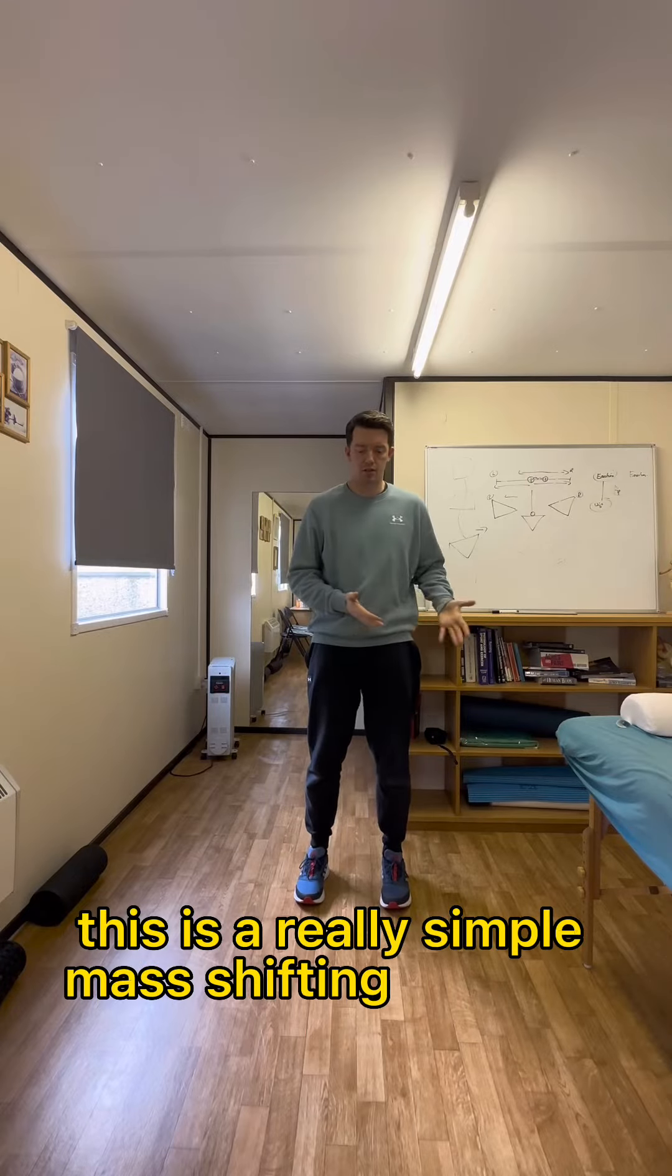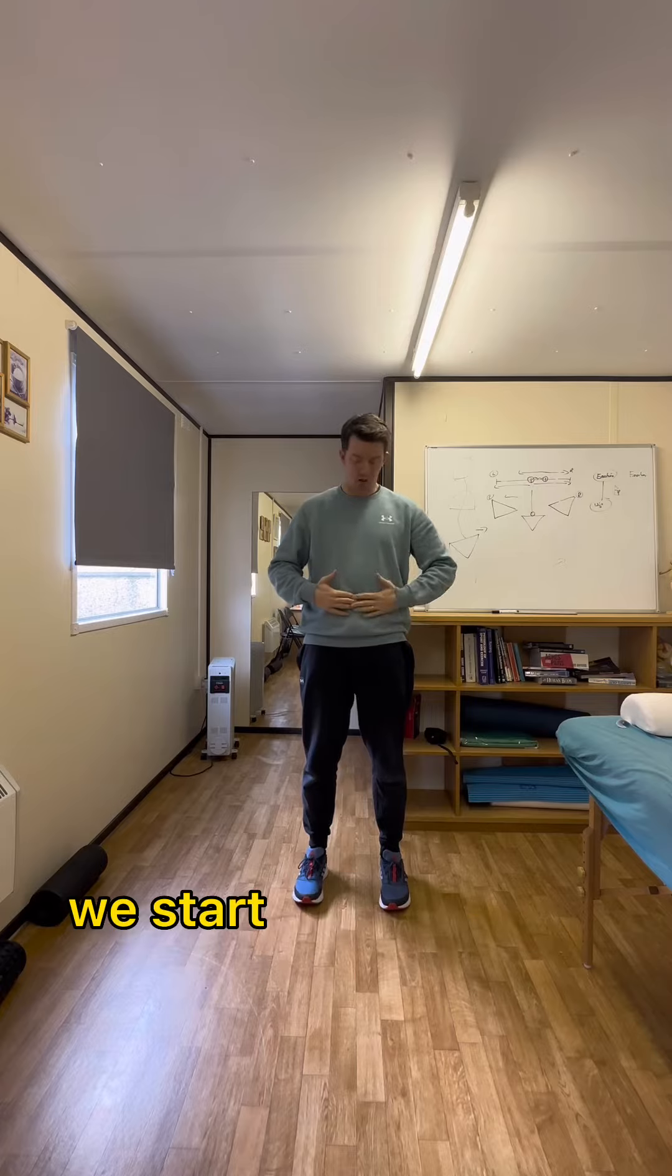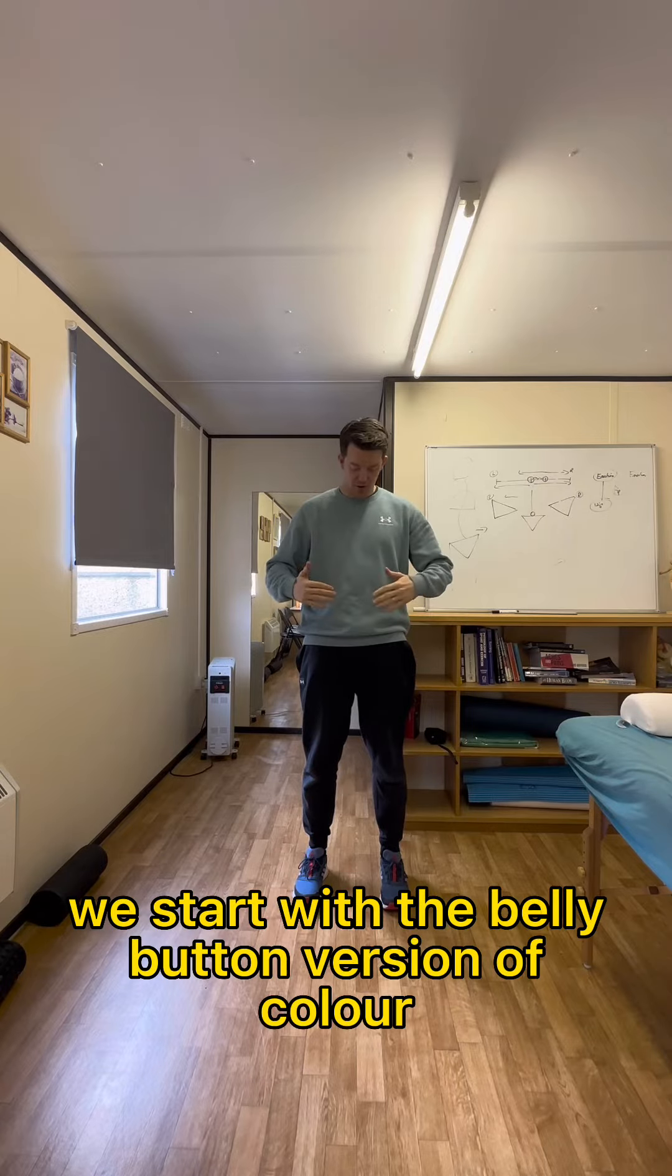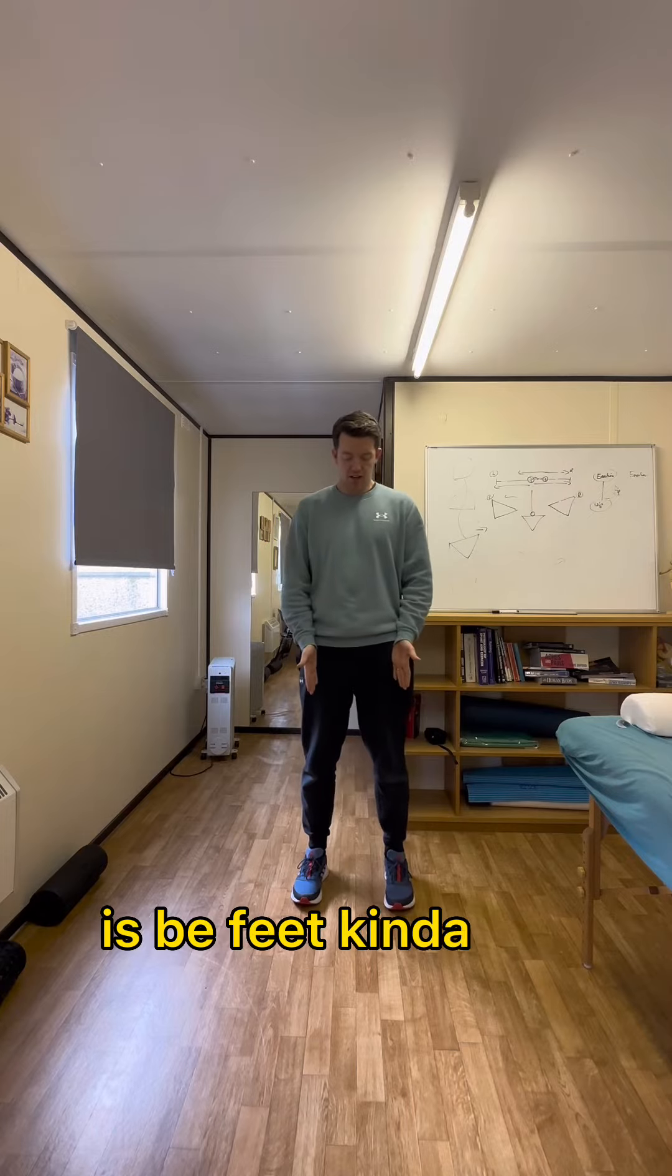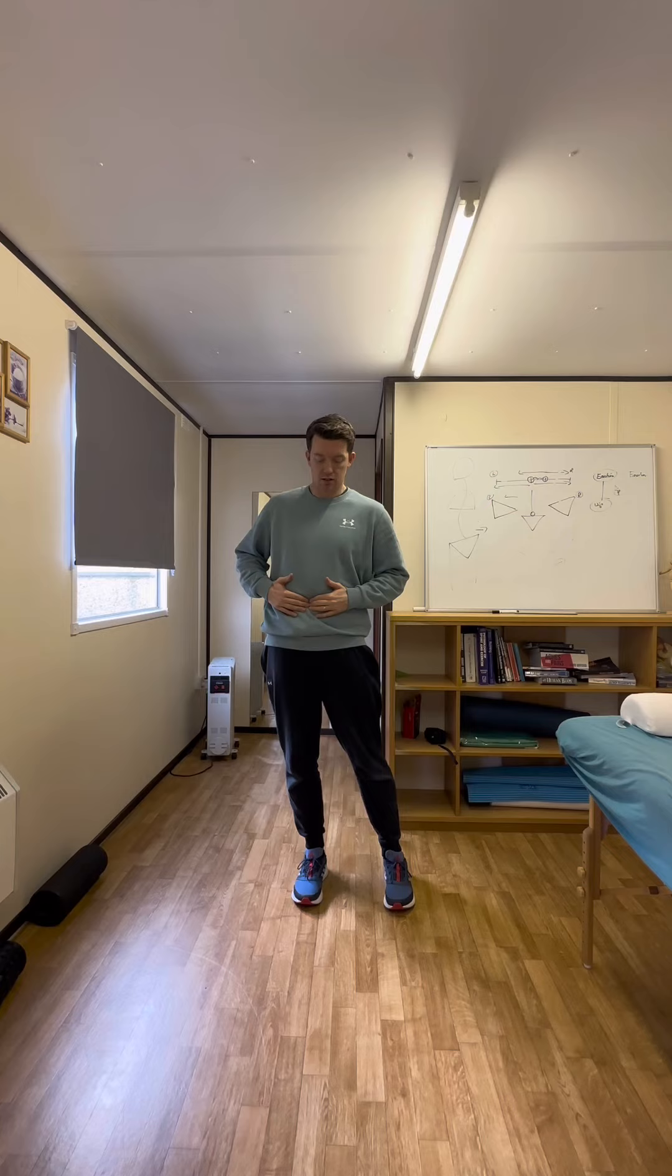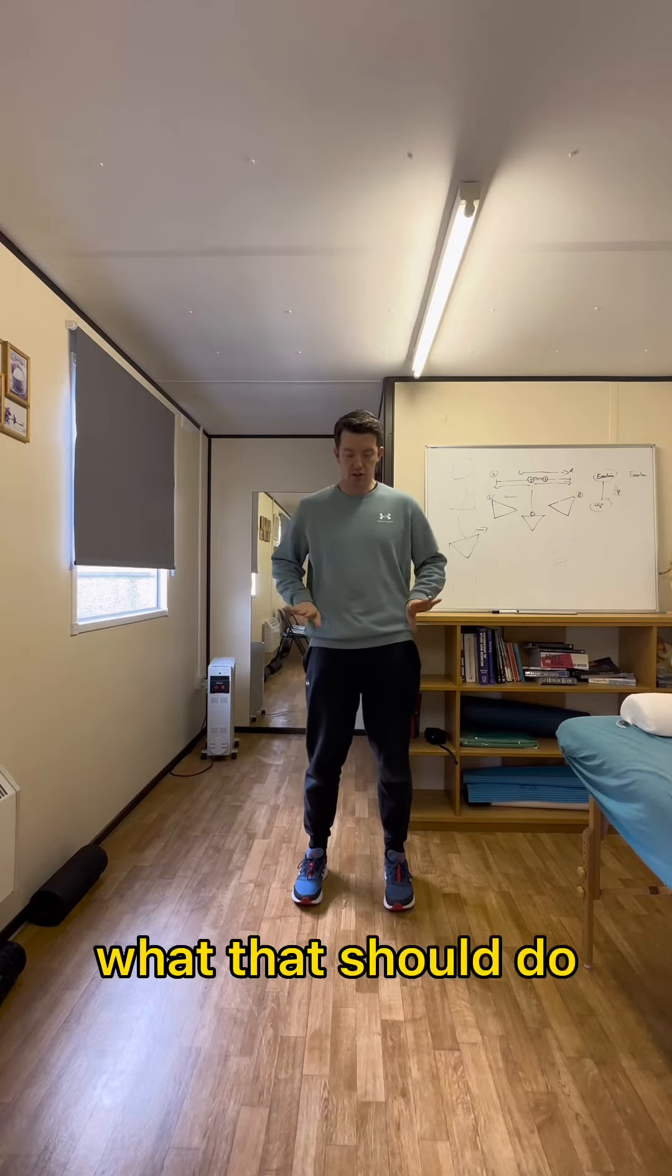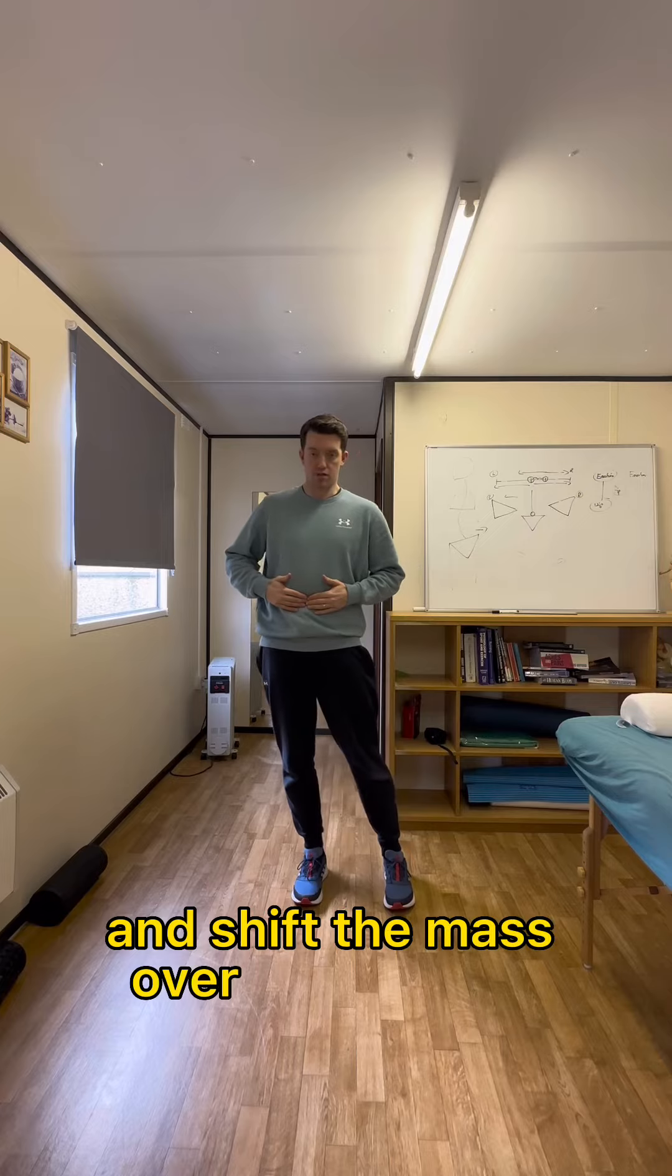This is a really simple mass shifting exercise. We'll start with the belly button version. Place your hands on your belly button, feet kind of hip width apart, and shift your belly button sideways. That should stop you doing this pelvis hike and drop and shift the mass over onto the leg.